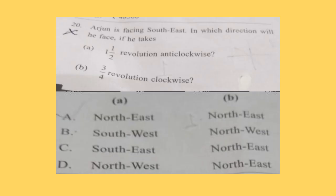Question 20: Arjun is facing southeast. In which direction will he face if he takes (a) one and a half revolution anti-clockwise, (b) three by four revolution clockwise? Correct answer is option D. (a) is northwest and (b) will be northeast.